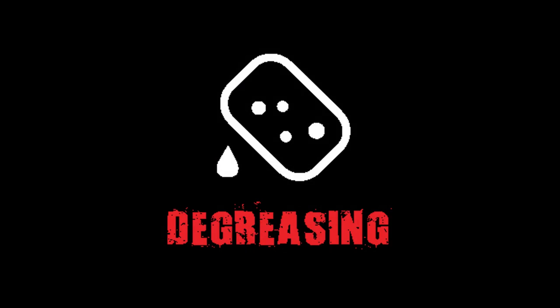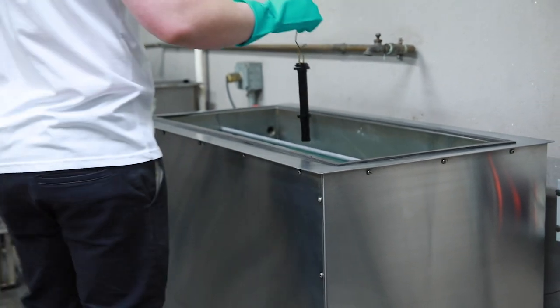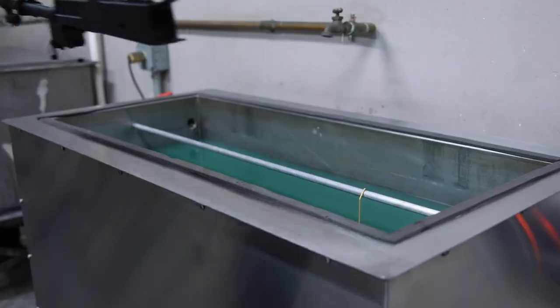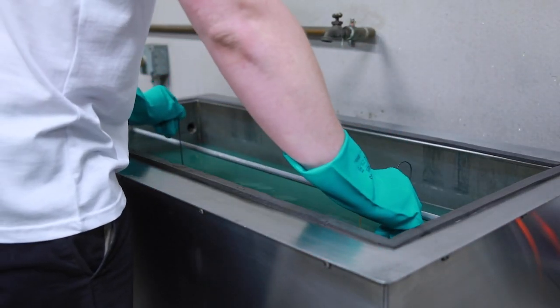Step 2: Degreasing. During this process, your rifle will be placed in a sonic tank, making sure that all parts are given an acetone bath to remove all oil, grease, and dirt.